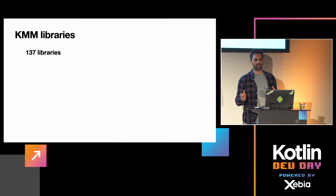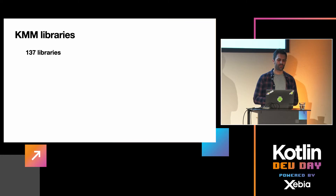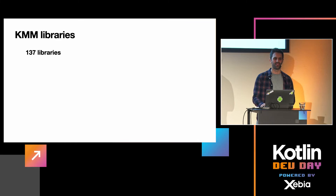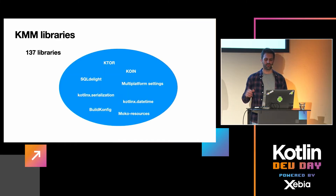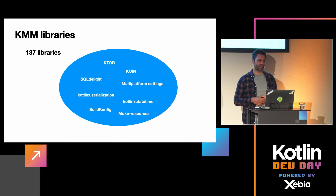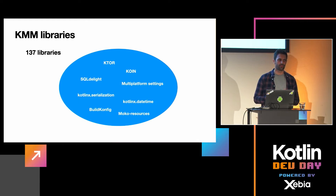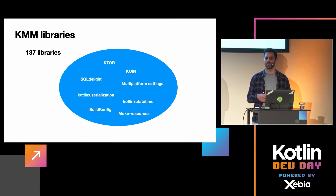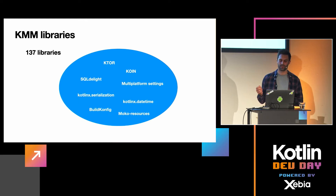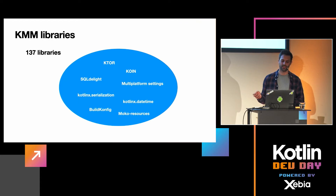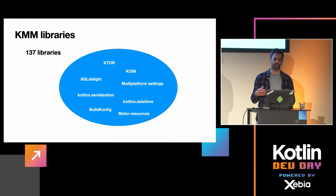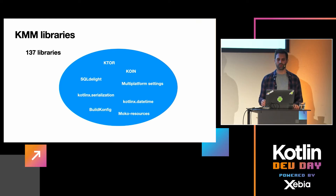KMM is maybe not as popular as other frameworks, but we already have 137 libraries done by the community or companies. The main ones I'm using in our project are: Ktor for networking, Koin for dependency injection, SQLDelight for persistence, Multiplatform Settings for user data like shared preferences, Kotlinx Serialization, DateTime, BuildConfig for different project configurations, and Moko Resources to have resources in shared code.